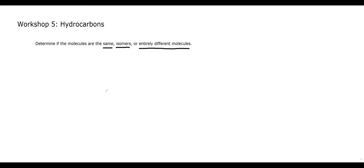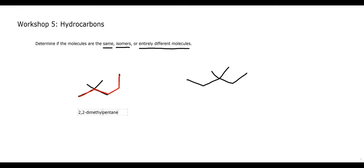Let's compare the next set of molecules. Working through the first molecule, we highlight the longest possible chain. This is a one, two, three, four, five carbon chain — a pentane — with two methyl groups on the second carbon. So this is 2,2-dimethylpentane. We have two methyl groups on that second carbon.